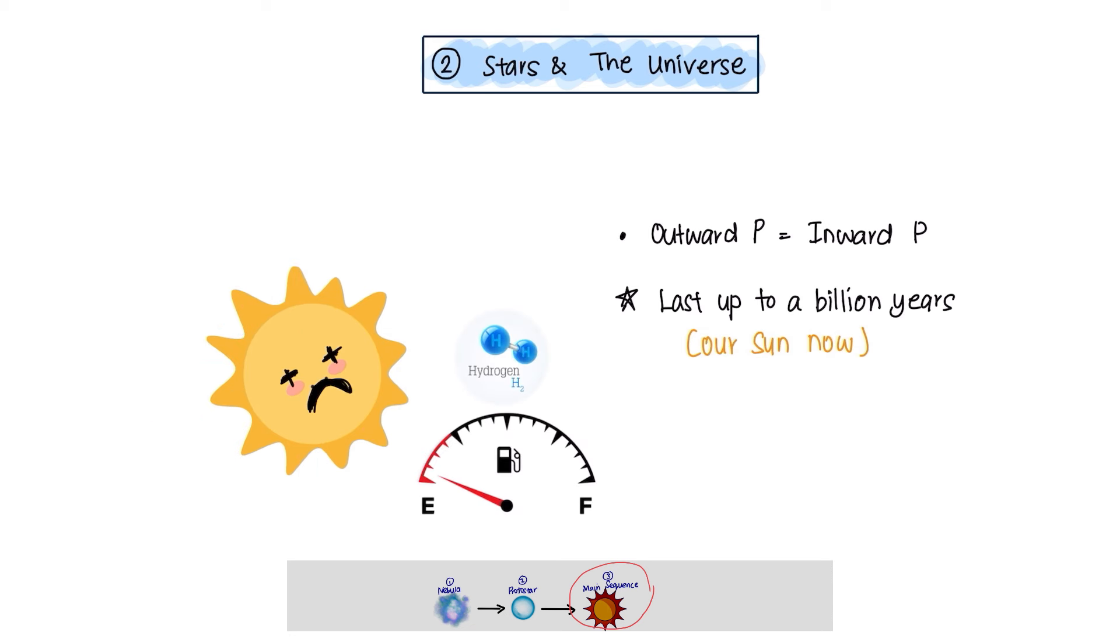At some point though, the star will start to run out of hydrogen, which is the fuel. After this formation, the star is now ready to enter the next phase. But, this depends on how big the initial star was.